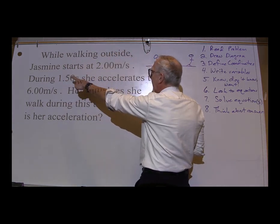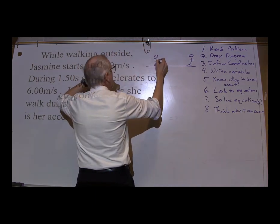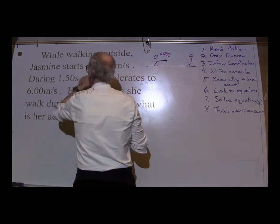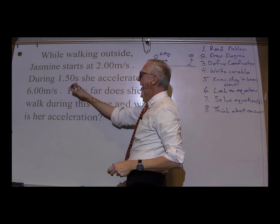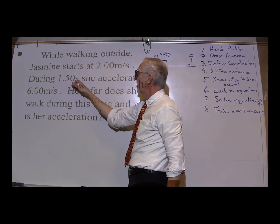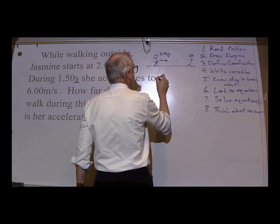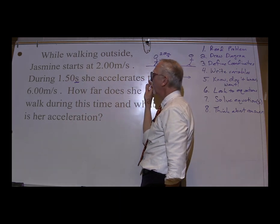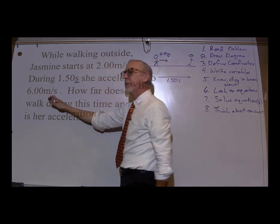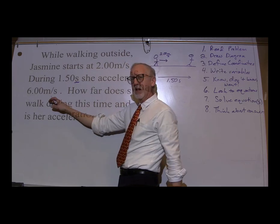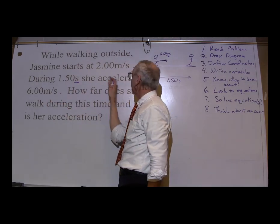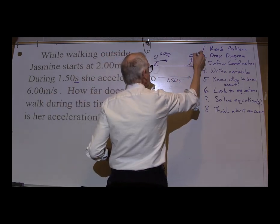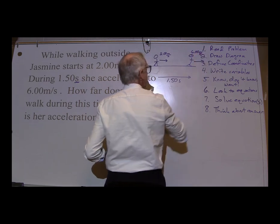What do we know? She starts walking outside at 2.00 meters per second, so she's starting at 2.00 meters per second. During 1.50 seconds — what kind of quantity is that? Units of seconds, so it's got to be a time. This motion is going to take 1.50 seconds. She accelerates to 6.00 meters per second. That looks like a velocity, and if she accelerates to that, it must be her final velocity — 6.00 meters per second.